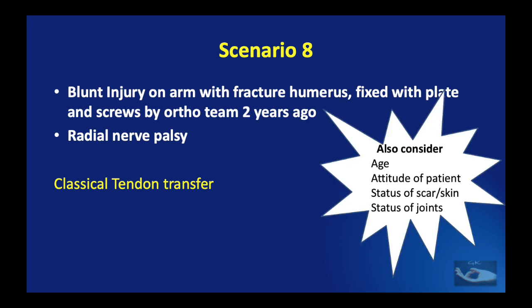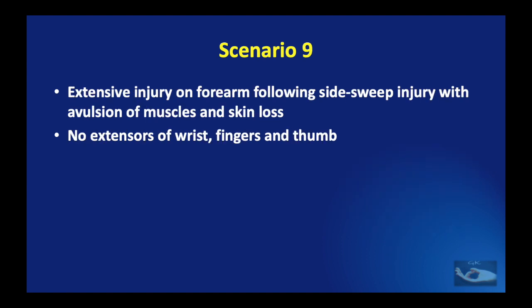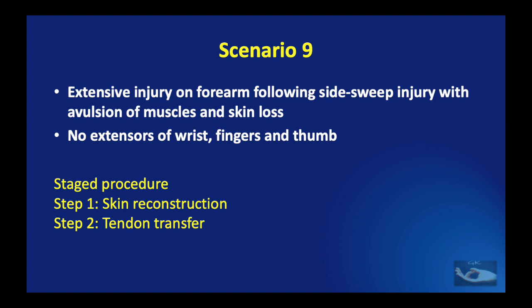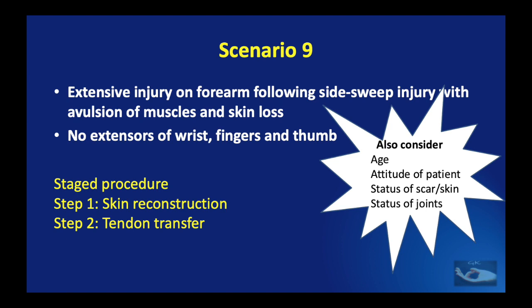A classical tendon transfer needs to be done for such patients to ensure good extension of the wrist, fingers, and thumb. Although it is only a classical tendon transfer that is going to be done, we need to assess the age of the patient, the attitude of the patient, and why he had defaulted treatment for so long. The status of the skin or scar and the status of the joints must be assessed. The final scenario: a patient who presents with radial nerve palsy or lack of extension of the wrist, fingers, and thumb following an extensive injury on the forearm — a side-sweep injury with avulsion of the muscles and skin loss. Such patients will require skin reconstruction if they present in the acute stage, or if they present after skin reconstruction has been done, they need a tendon transfer.